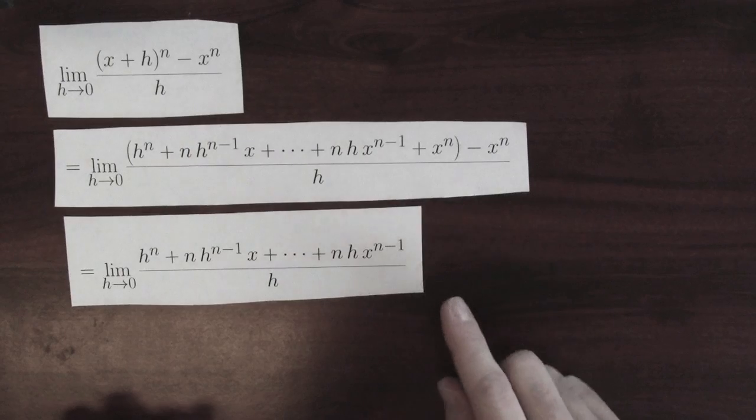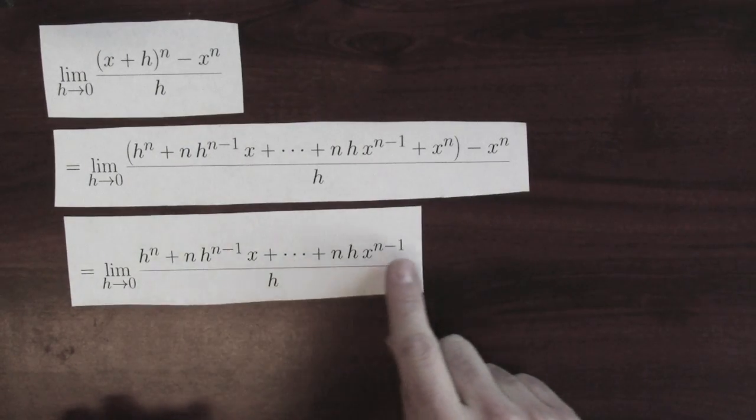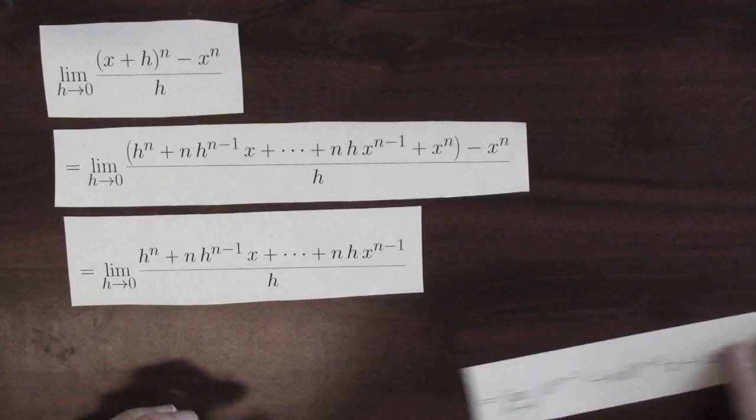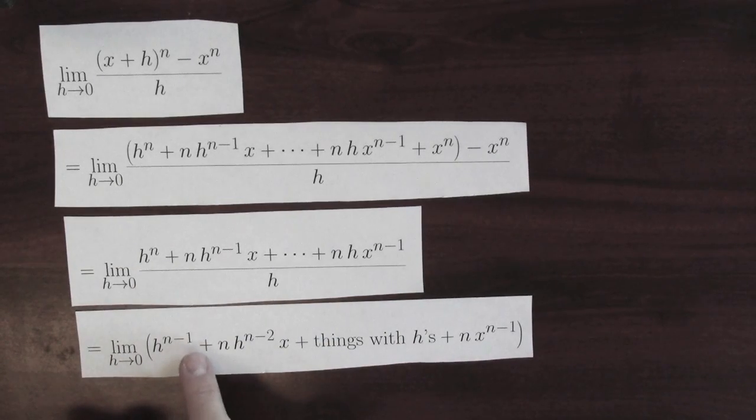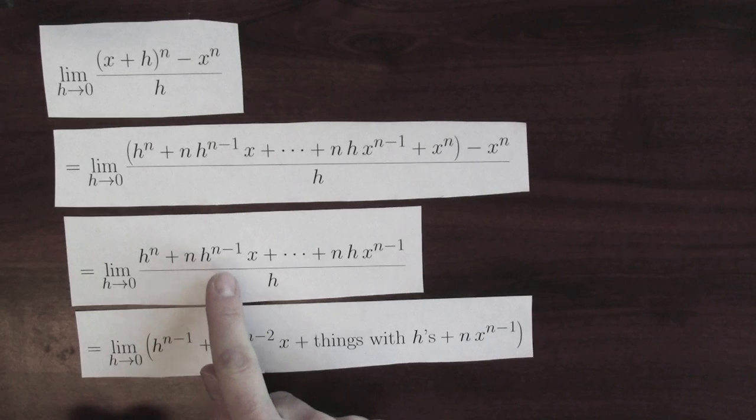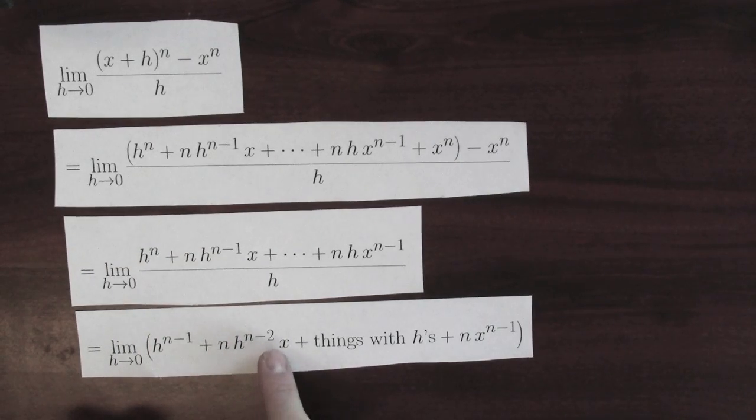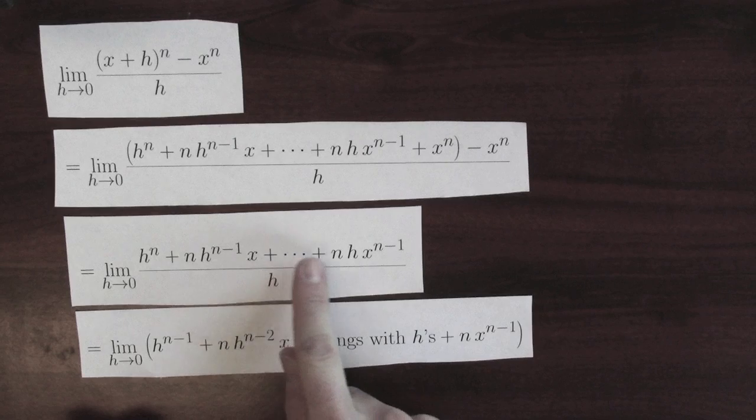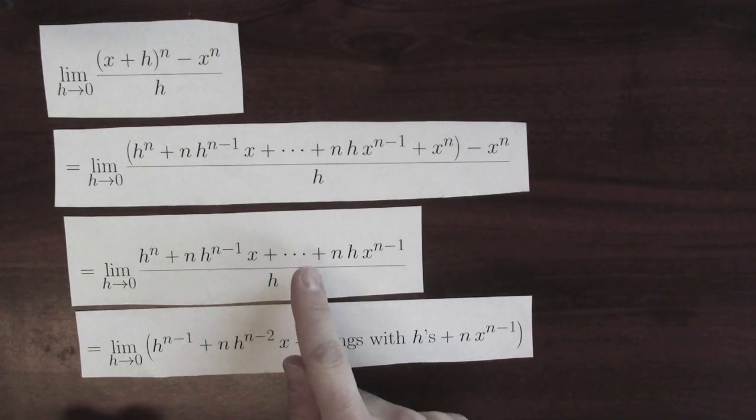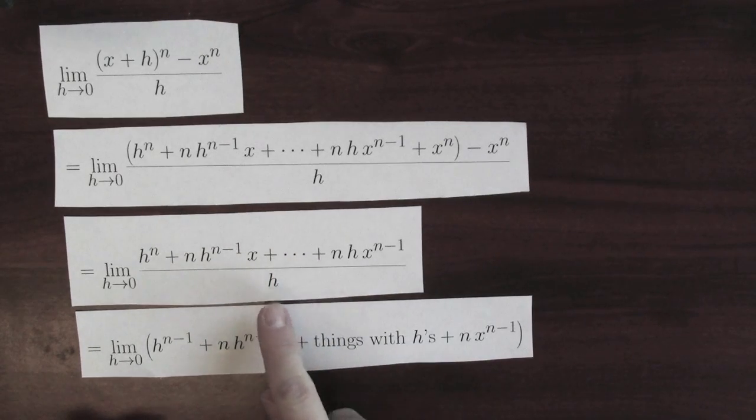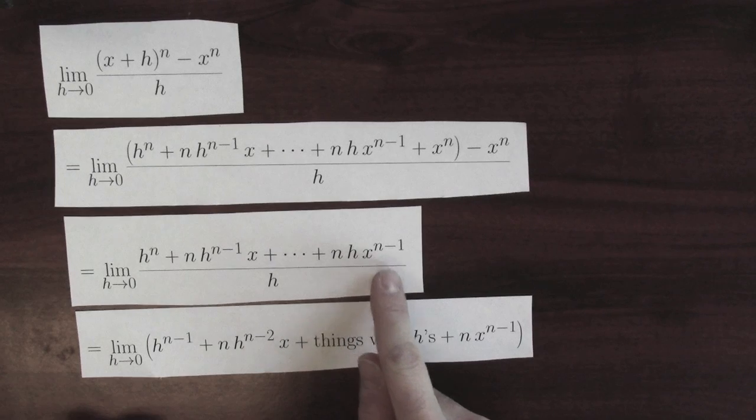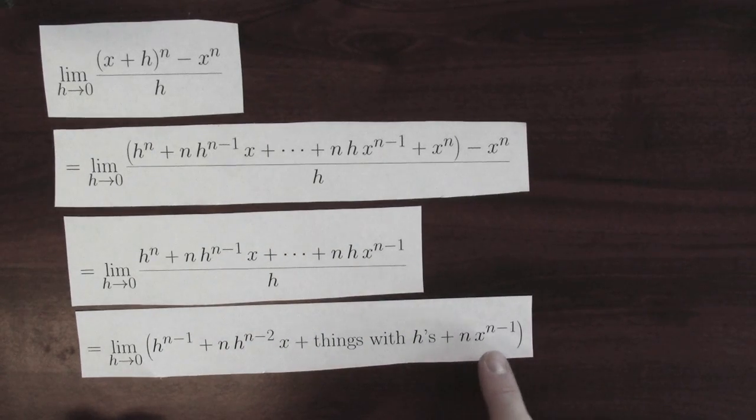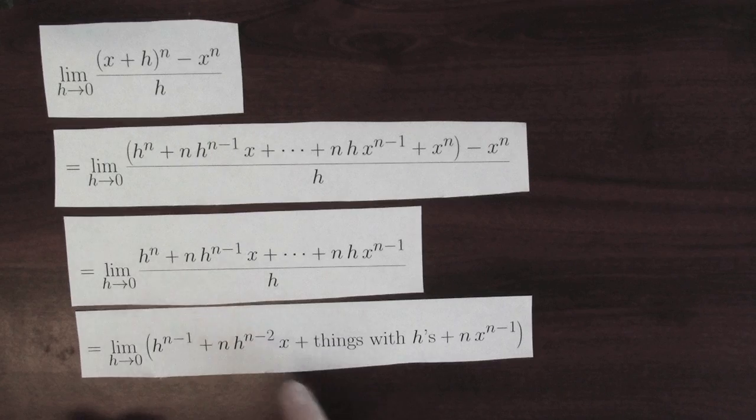And note that every single term in the numerator here has an h. So I can then do the division just like before. The h to the n over h becomes h to the n minus 1. And h to the n minus 1 times x becomes n h to the n minus 2 times x. Everything in the dot dot dot here has at least an h squared in it. So when I divide it by h, everything that's left over still has at least one h in it. This last term, n h times x to the n minus 1 over h becomes n x to the n minus 1 after I divide by h.